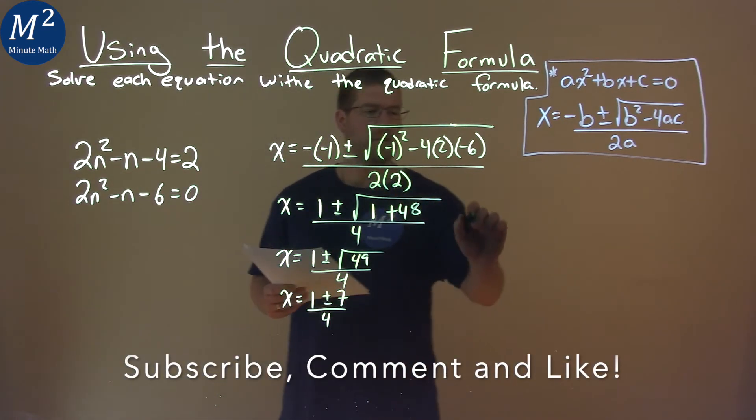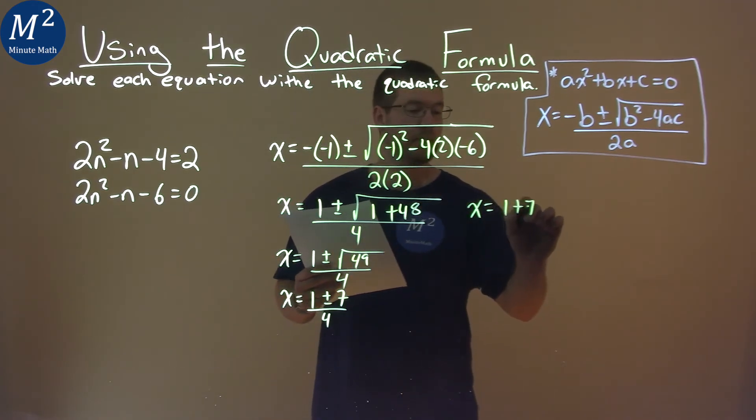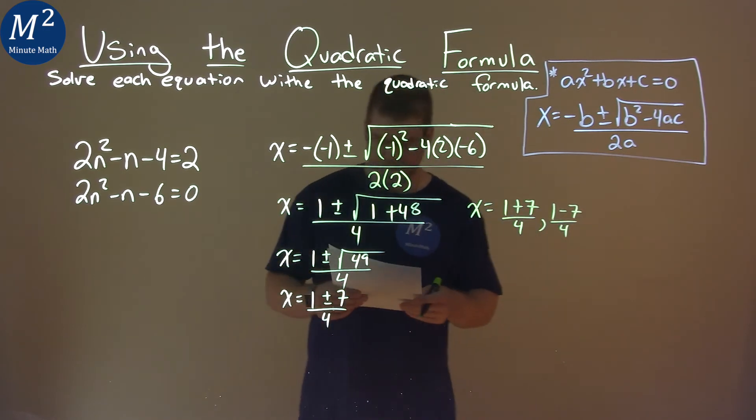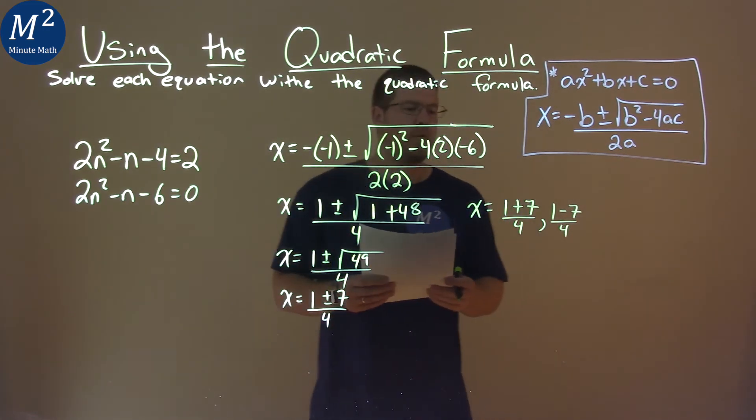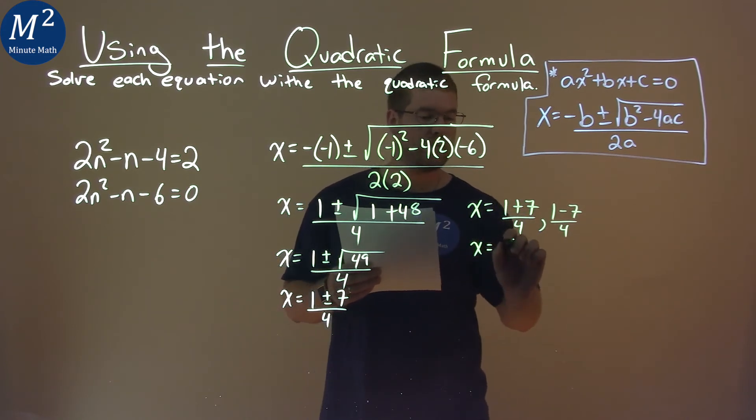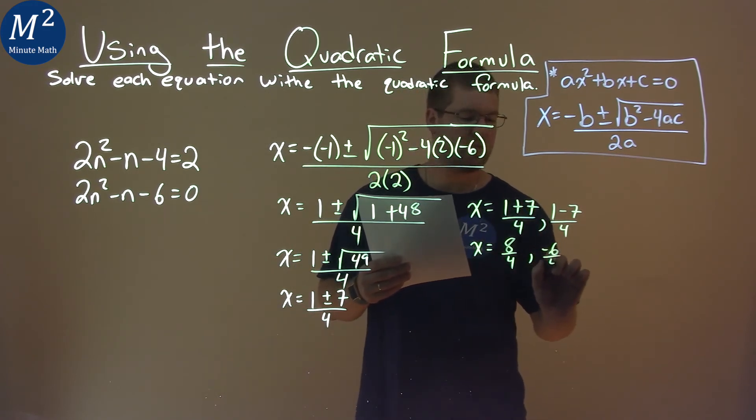At this point, I like to break it down to both parts: 1 + 7 over 4, and 1 - 7 over 4. From there, we solve each part individually. 1 + 7 = 8 over 4, and 1 - 7 = -6 over 4.